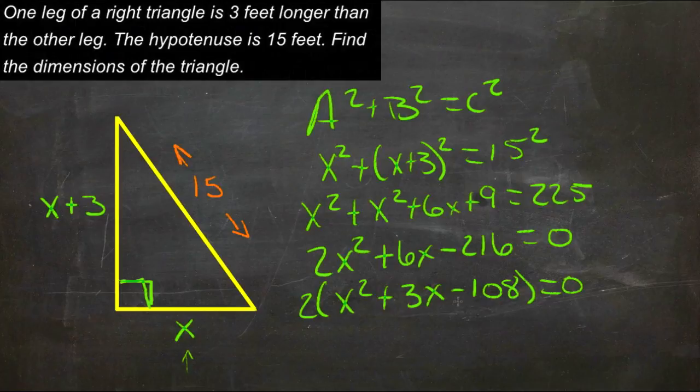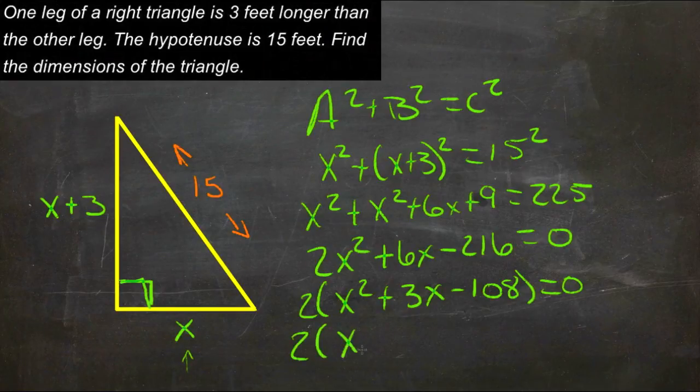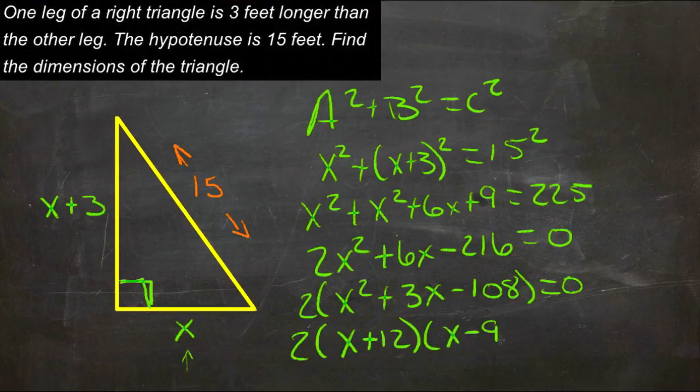Now we need to factor that trinomial. If we go through and find, we need two numbers that multiply to be negative 108 and add to be 3. 9 times 12 is 108 - negative 9, positive 12 - yeah, that would work. So we have 2 times (x plus 12) times (x minus 9) equals 0.